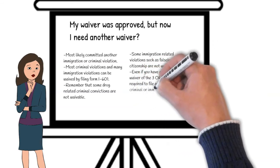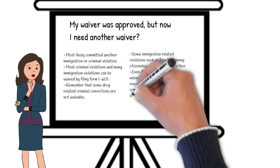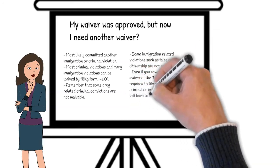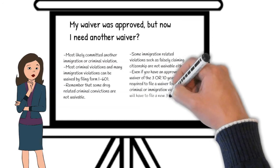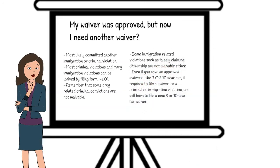Finally, if the beneficiary is subject to the three or ten year bar, a new waiver for the three or ten year bar will need to be refiled — even if the waiver for the bar was previously approved — if the beneficiary is also required to file a waiver for another criminal or immigration violation.